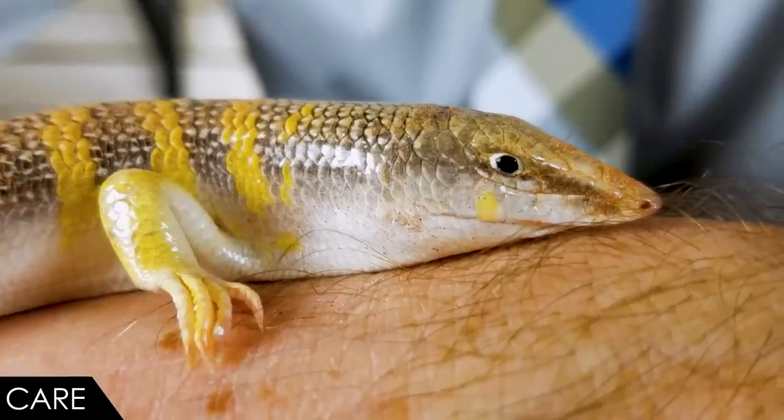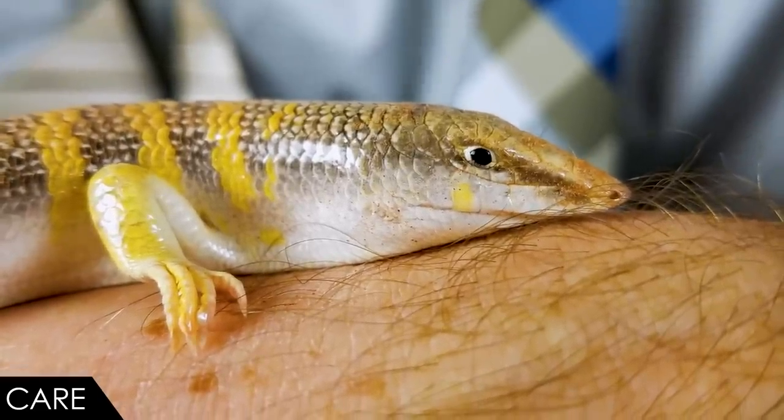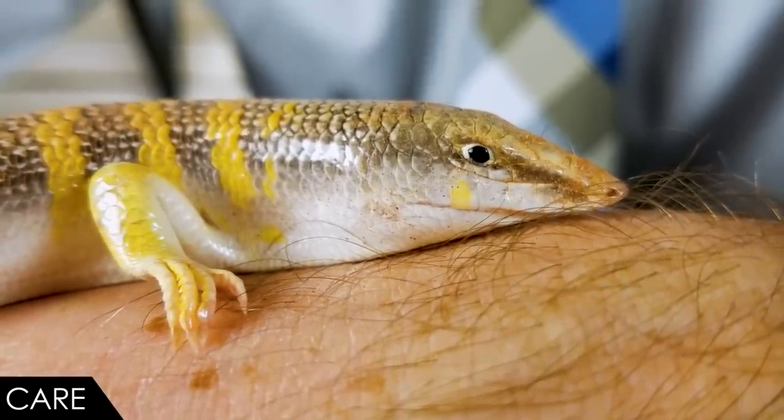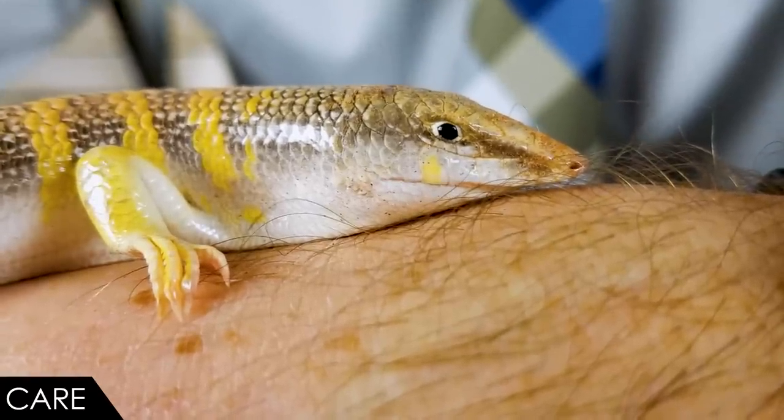When it comes to care, we give the sandfish skink a score of 5 out of 5. Honestly, as far as lizards or reptiles in general go, these are about as easy to care for as is possible. They come from some of the most inhospitable environments in the whole world. And as a result, they're pretty much tough as nails. For the most part, they just need to be kept hot and they need to be kept dry.